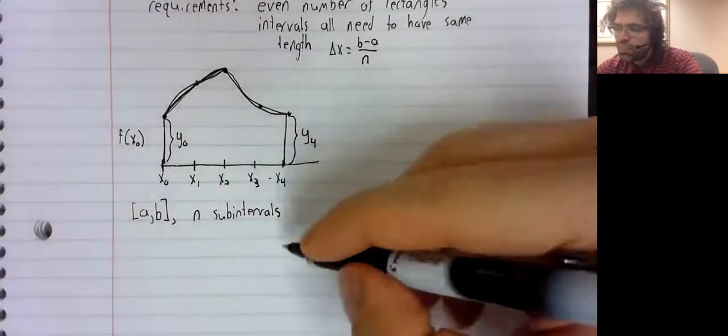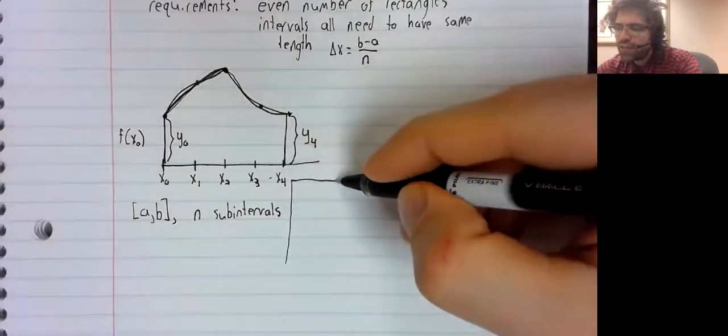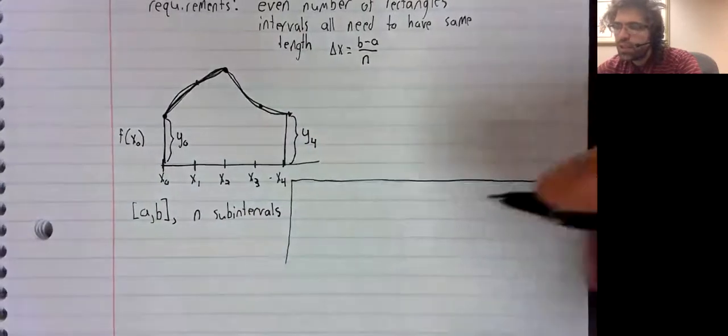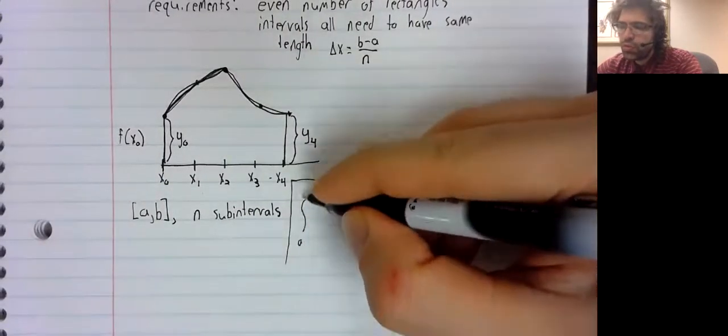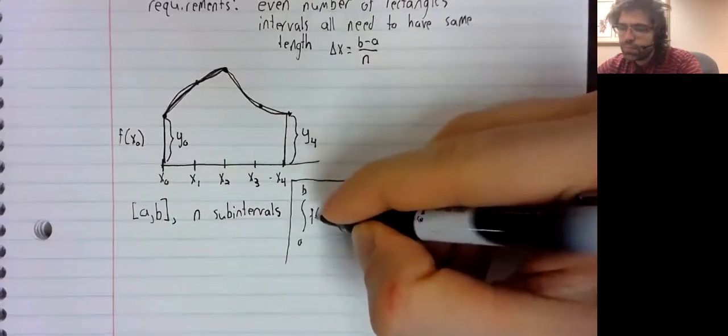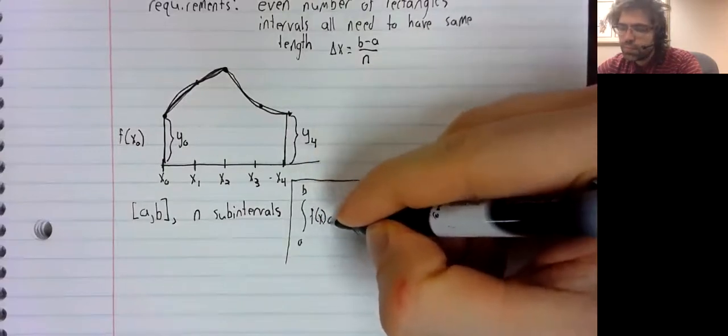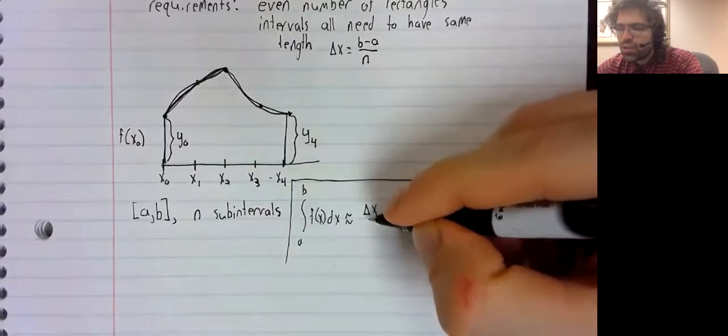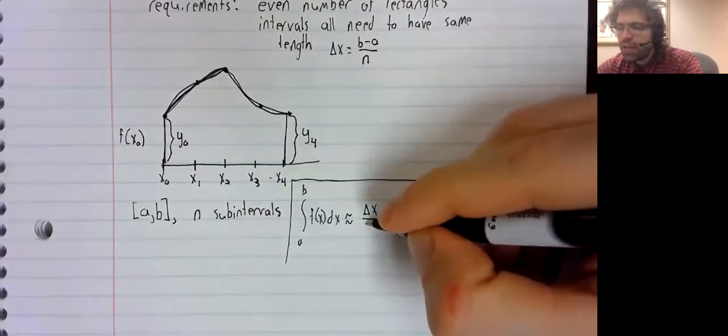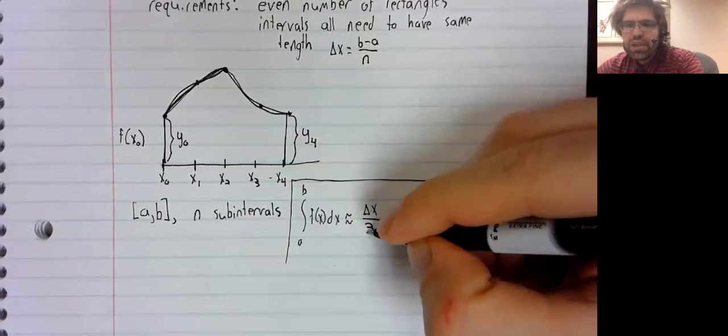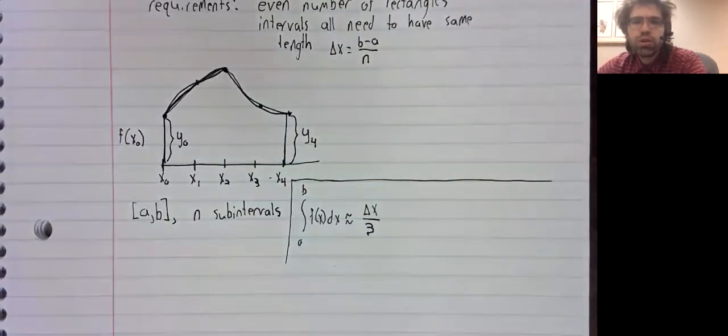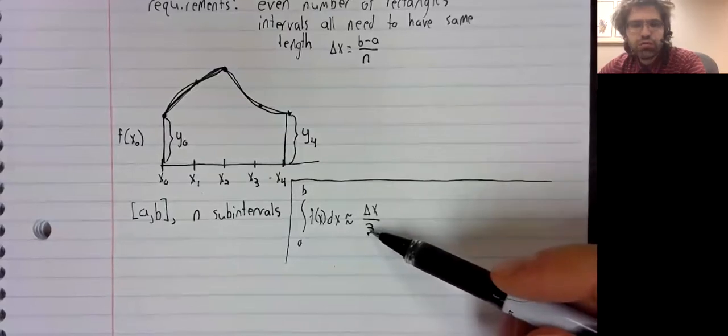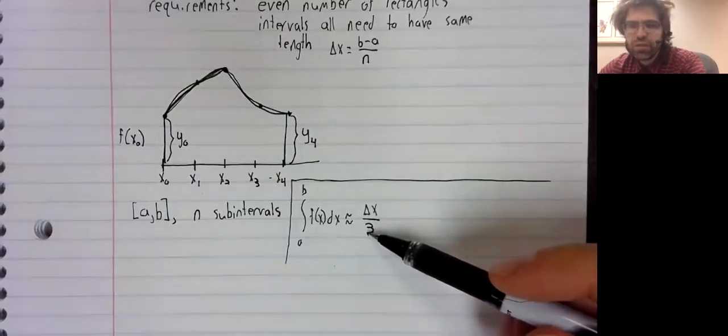And Simpson's Rule says that the integral is approximately delta x divided by three. Be careful. Simpson's Rule looks a lot like the trapezoidal rule, but there are differences. There's a three here instead of a two.